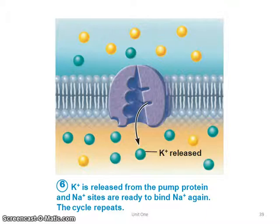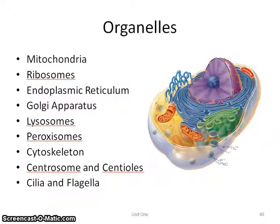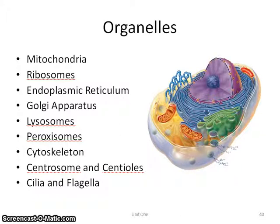Now that we've covered the membrane pretty well, let's look at the other things that are inside the cell. All these little guys inside the cell are called organelles. We have a mitochondria, ribosomes, endoplasmic reticulum, Golgi apparatus (sometimes called the Golgi body), lysosomes, peroxisomes, cytoskeleton, centrosome and centrioles, and cilia and flagella. Those are kind of new words, so it helps to practice pronouncing them too.